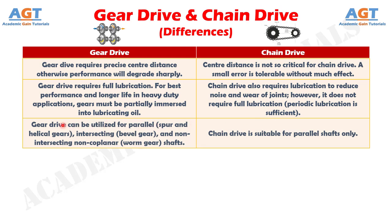Number 8: Gear drive can be utilized for parallel shafts — spur and helical gears — intersecting shafts — bevel gear — and non-intersecting, non-coplanar shafts — worm gear. Whereas, chain drive is suitable for parallel shafts only.